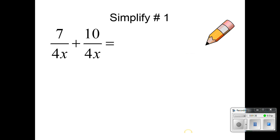Alright example number one. The denominators are the same so I can add the numerators. 10 plus 7 is 17 over 4x. 17 is not factorable so this would be my final answer.